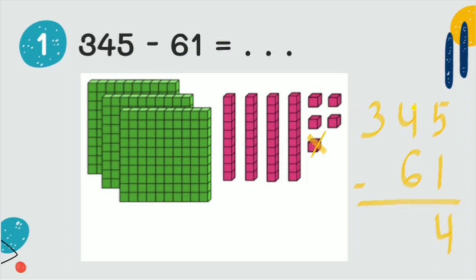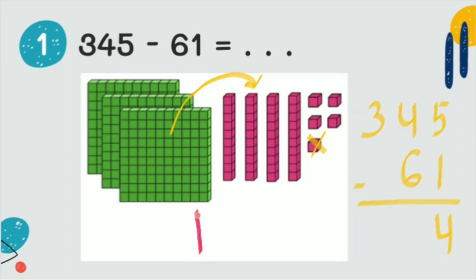Next we are going to subtract the tens, but we cannot subtract four minus six, so we take from the hundreds. Look at the picture here — we take one hundred and then we move it into tens. I will draw ten tens because one hundred is equal to ten tens.